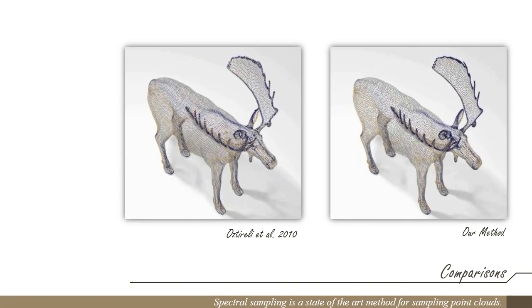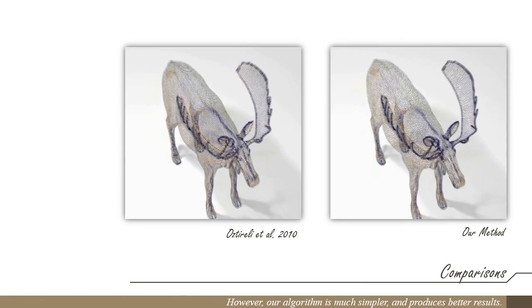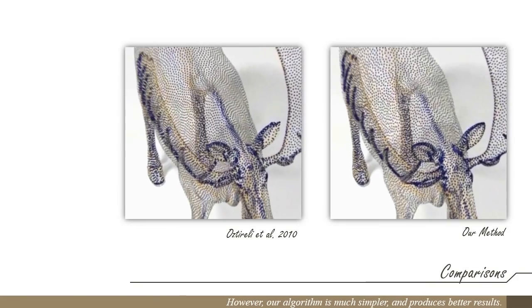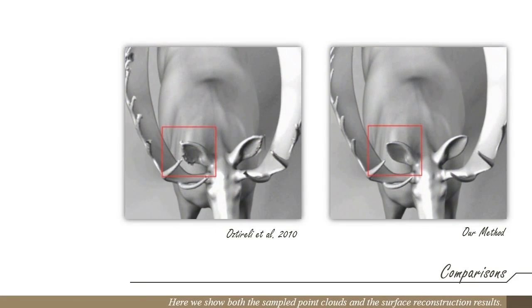Spectral sampling is a state-of-the-art method for sampling point clouds. However, our algorithm is much simpler and produces better results. Here we show both the sampled point clouds and the surface reconstruction results.